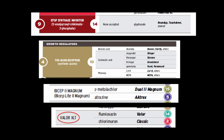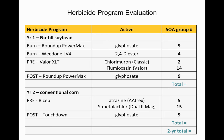If we modify this by adding a common soybean premix — in this case Valor XLT, which is a mix of flumioxazin (Valor) and chlorimuron (Classic) — that's Group 14 and Group 2 sites of action. We install that in the beans for pre-emergence. The corn year remains unchanged. We still count glyphosate only once in a year and once over two years, giving us 4 sites of action in the beans (9, 4, 2, 14) and 3 in the corn (5, 15, 9), for a total of 6 over two years.